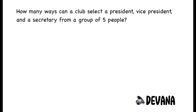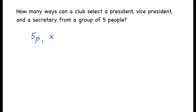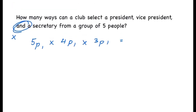For this question: how many ways can a club select a president, vice president, and a secretary from a group of 5 people? We use 5P1 times 4P1 times 3P1. After the president is chosen the total decreases to 4, and after the vice president is chosen it decreases to 3. This equals 60.